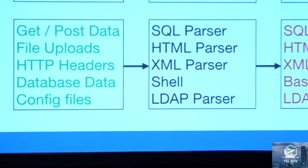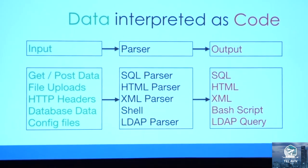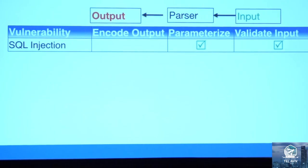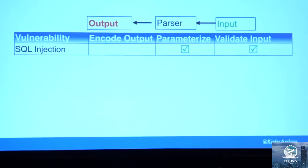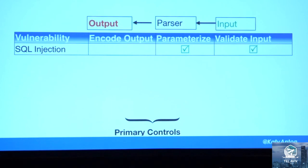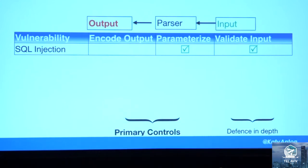I will flip the view to focus on the output, which ends up being executed as code. In the case of SQL injection, this occurs when the input is combined with the SQL query and sent to the parser, and that's when it ends up being executed as a SQL command. The primary defense is to parameterize the queries — to separate the input from the actual SQL command before sending it to the SQL parser. As defense in depth, we still have to validate the input, and ideally we must do both at the same time.